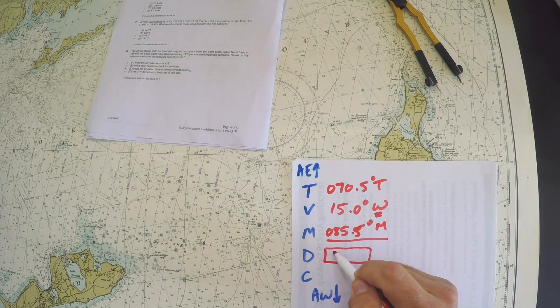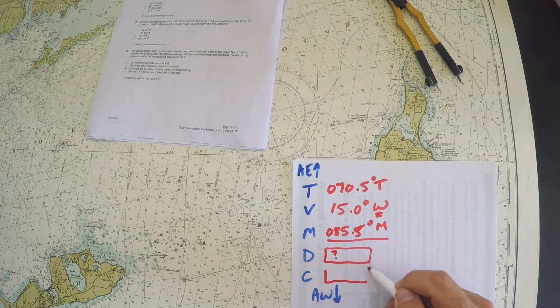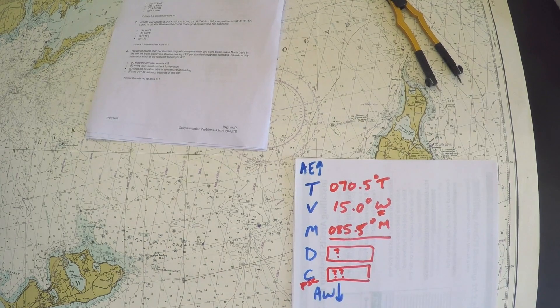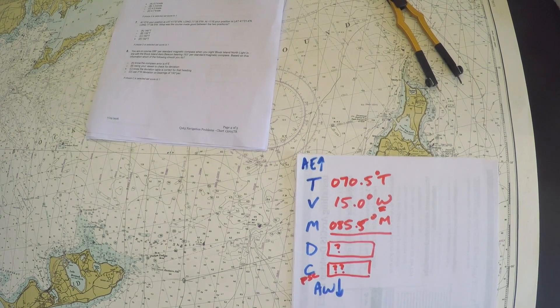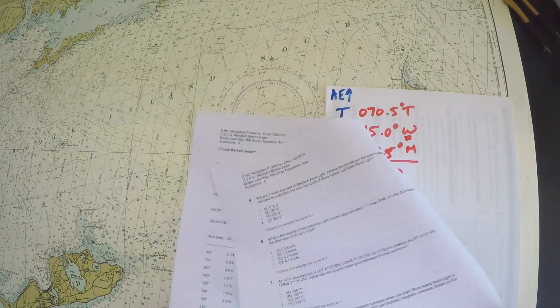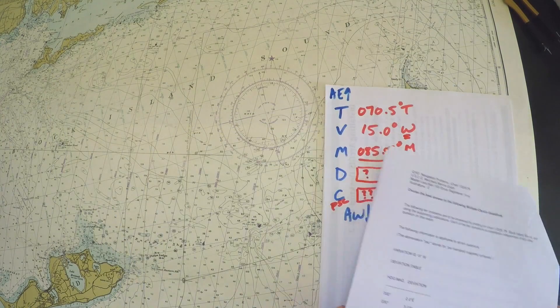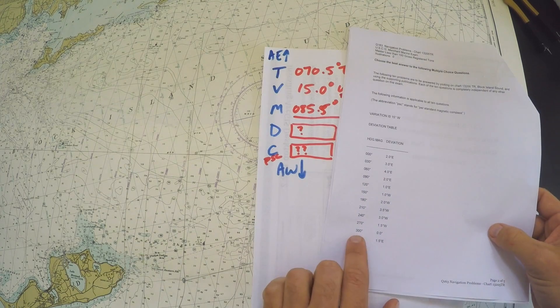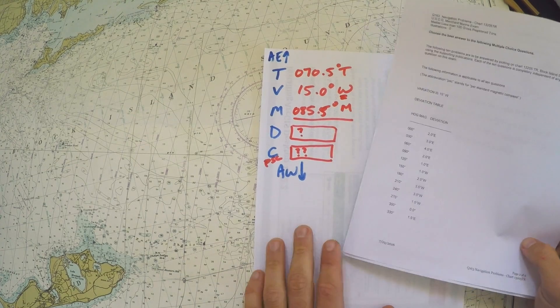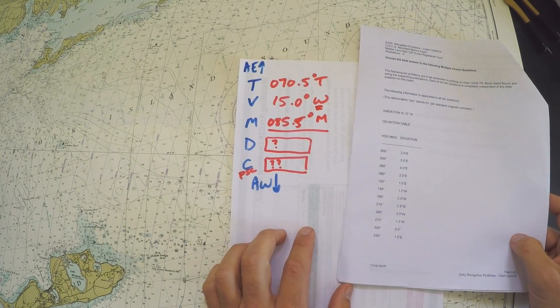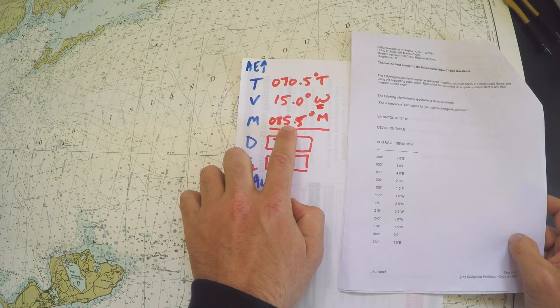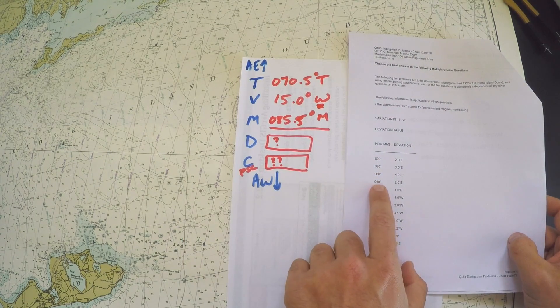What I need to do is find the deviation of the magnetic compass, and for that I need to look into the deviation table. In the previous problem we were looking for a course of 300 and our deviation was zero. In this problem they're testing us a little bit more. We have a course of 085.5 degrees magnetic and that is not listed on this table.